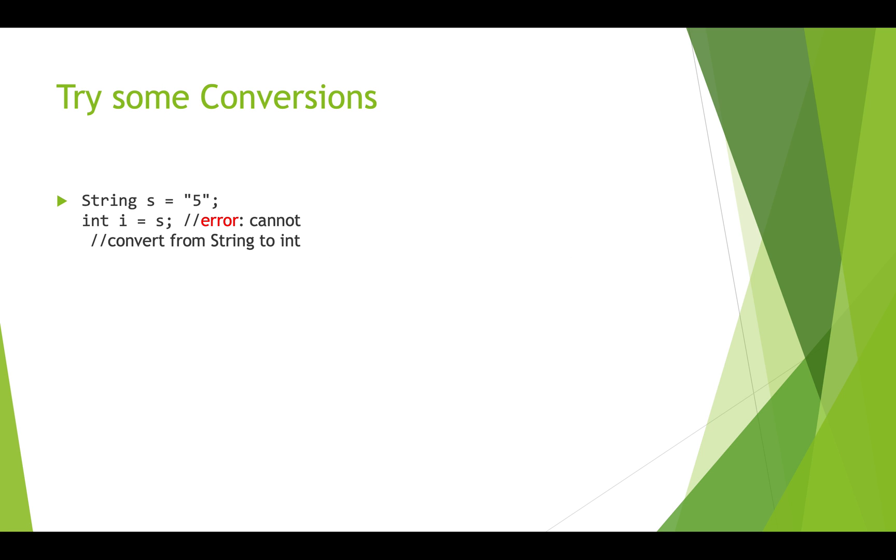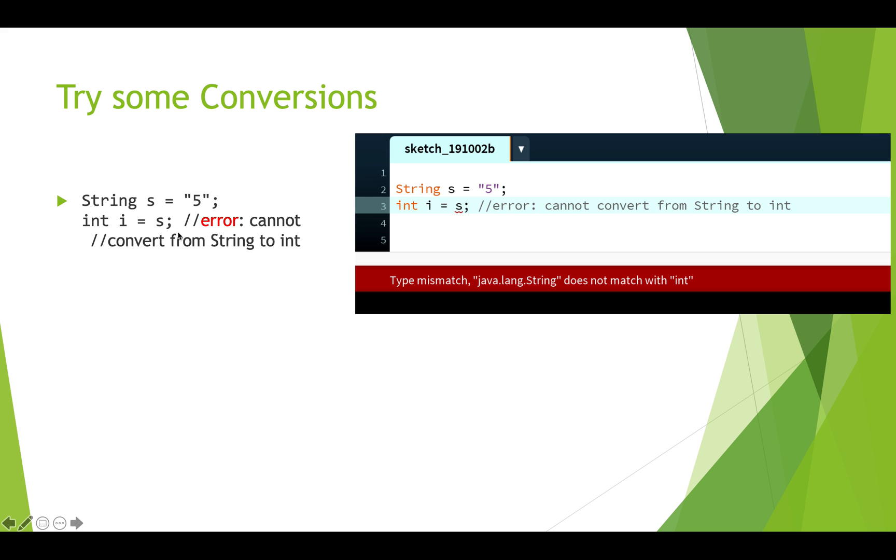So if we wanted to try some conversions, we'll see that we run into trouble when we try to go from ints to strings. In this example we've created a string variable s, we've assigned it the string five because we put it in quotation marks, and then we have an int variable i and we try to assign s into that. So we're trying to copy this string into this int. This will give us an error. If you try to do this in processing, you'll see this type mismatch. JavaLang string does not match with int.